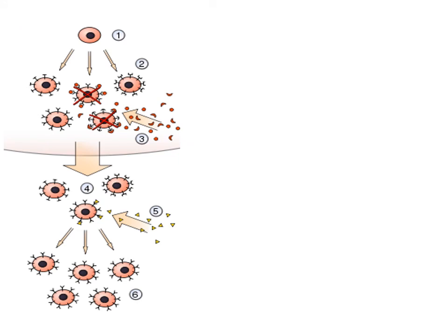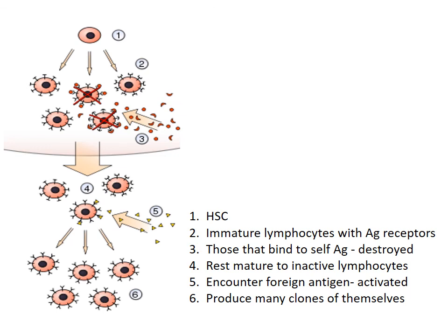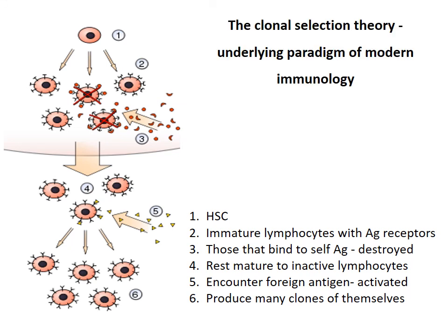In the image, a hematopoietic stem cell undergoes differentiation and genetic rearrangement to produce immature lymphocytes with many different antigen receptors. Those cells that bind to self-antigens — i.e., antigens from one's own tissue — are destroyed. The remaining cells mature into inactive lymphocytes. When such inactive lymphocytes encounter a matching foreign antigen, they become activated and produce many clones of themselves. This is the clonal selection theory, which is accepted as the underlying paradigm of modern immunology.